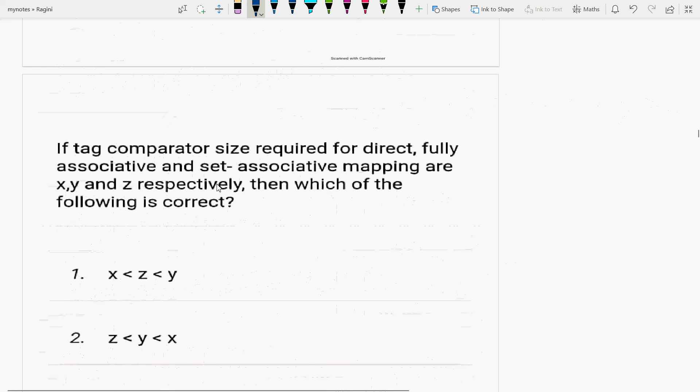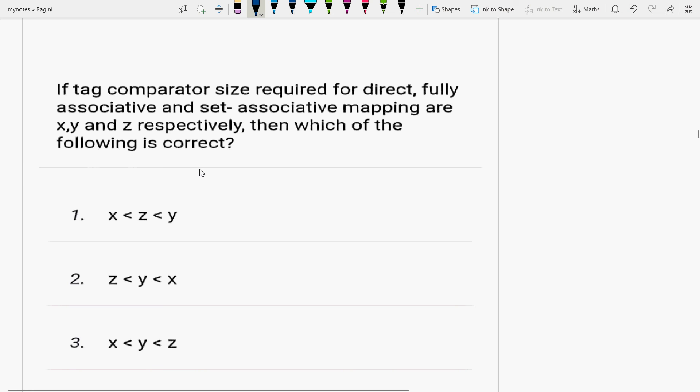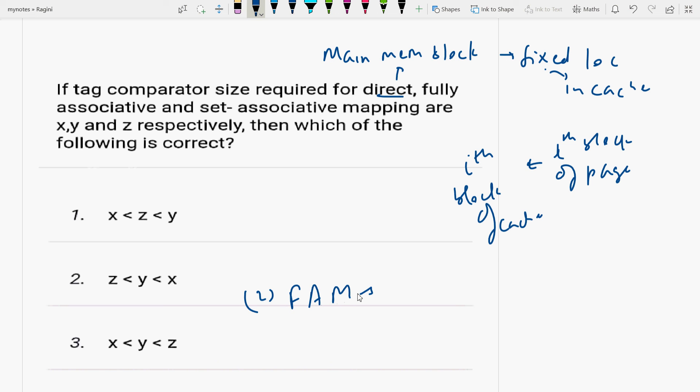Next question: if tag comparator size required for direct, fully associative, and set associative mapping are X, Y, Z, then which of the following is correct? First, what is direct mapping? In this mapping technique, a main memory block has fixed location in cache. The ith block of page is mapped to the ith block of cache. This is direct mapping. In fully associative mapping, main memory block can be placed at any line of cache.